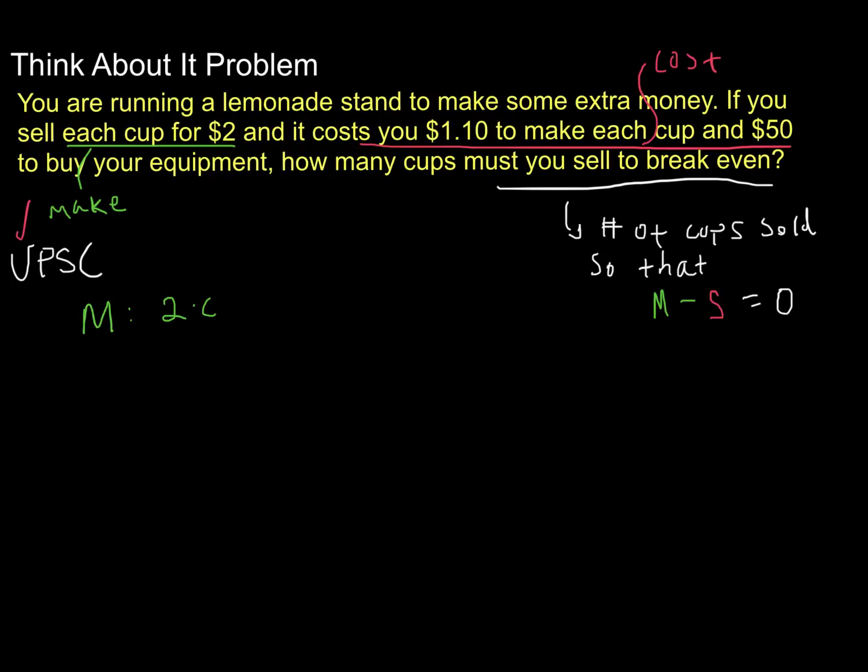And the amount that we spend, well, that's going to be $1.10 times the number of cups you sell, plus this $50 that just kind of is, you have to spend that because that's your equipment. And so now we can set up an equation where we have the amount we make minus the amount we spend, and we set it equal to zero, and we solve for the number of cups.